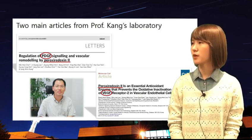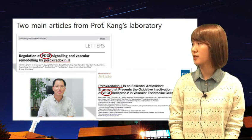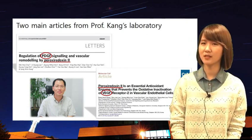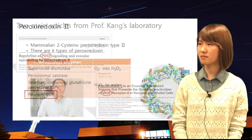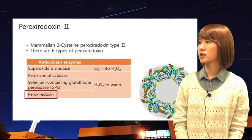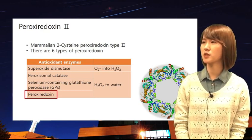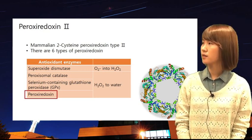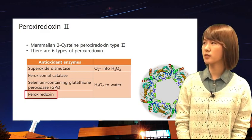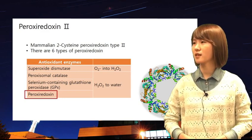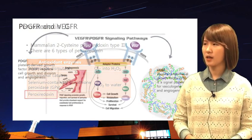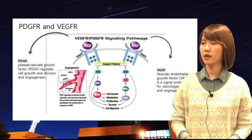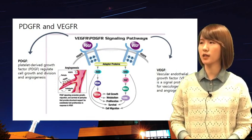They both focus on peroxiredoxin, an antioxidant enzyme for regulation of cell signaling pathways. Peroxiredoxin is one type of antioxidant enzyme. There are four types of antioxidant enzymes and only peroxiredoxin works in the signaling cascade. You should also know about two cell membrane receptors, PDGFR and VEGFR, for this lecture.